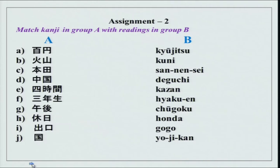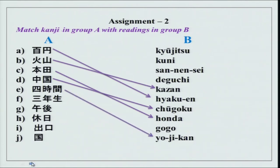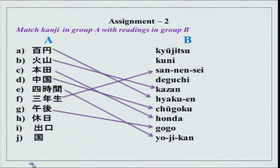Assignment 2: match kanji in group A with group B - readings are given. In the first one, hyakuen, kazan - this is interesting, this is hi, this is yama which is a mountain, so a fire mountain would naturally be a kazan, which is a volcano. Honda, chugoku, yojikan - kan is time period or span - san nensei, gogo, kyujitsu, deguchi and kuni. That is your kanji - I hope you got it right.